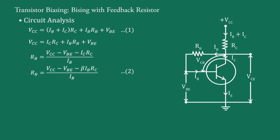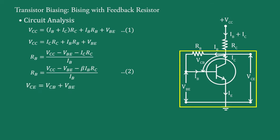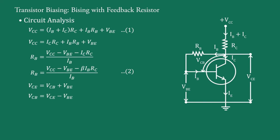RB can also be calculated by another method. Considering the voltage distribution around the transistor, we get VCB = VCC − VBE. Therefore, RB = VCB / IB = (VCC − VBE) / IB. So RB can be determined either by equation 2 or by this alternative formula.